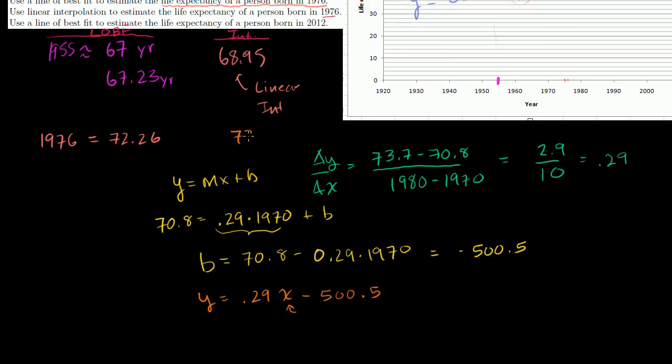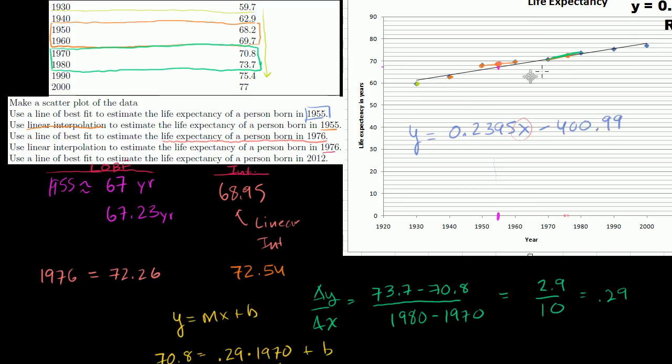0.29 times 1976 minus 500.5 is equal to 72.54. So we get 72.54 is the number we get when we do linear interpolation between those two data points. All we did is we figured out the equation of the line between those two points, and then we plugged in the number 1976 to get 72.54. And that's a slightly higher number than what the line of best fit gave us, but it's pretty close in either scenario.